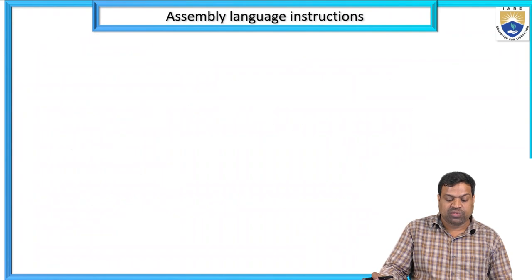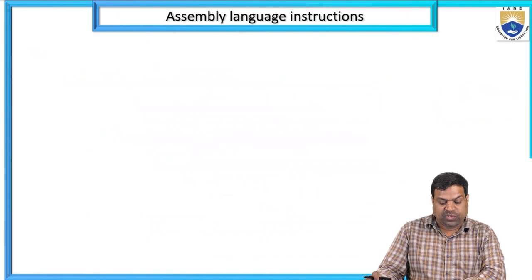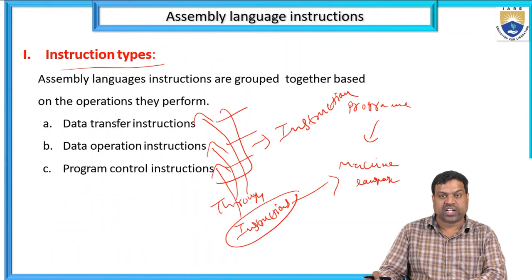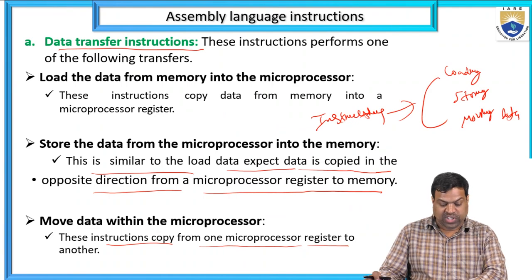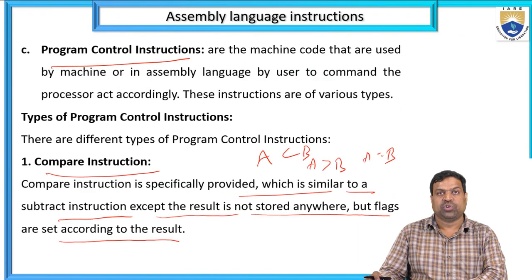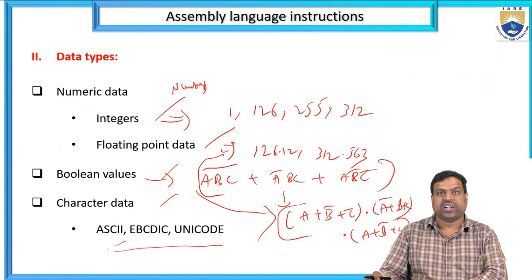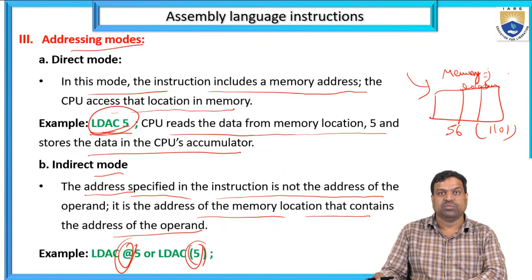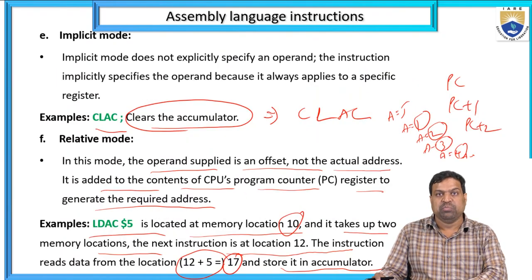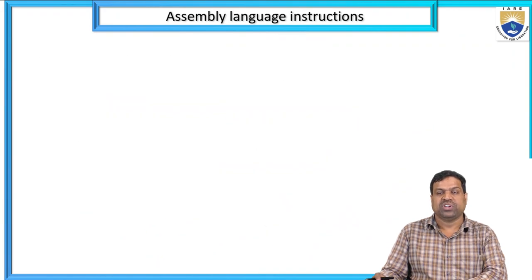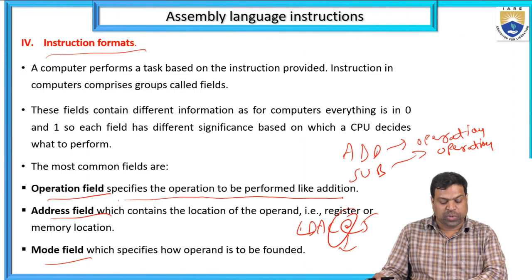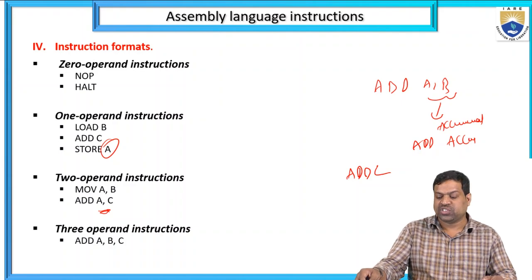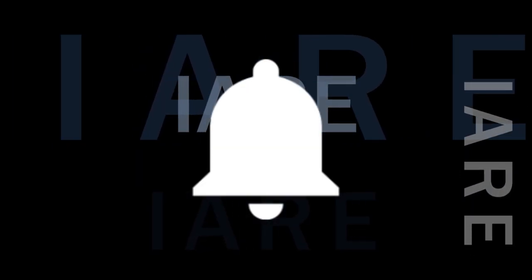These are the Assembly Language Instructions. We discussed: instruction type (data transfer, data operation, program control), data types (numerical, boolean, character), addressing modes (direct, indirect, register direct/indirect, immediate, implicit, relative, index, base address), and instruction formats (operation, address, mode fields; 0, 1, 2, and 3 operand formats). Thank you — like, share, and subscribe, and hit the bell icon for more updates.